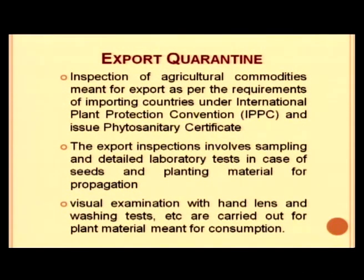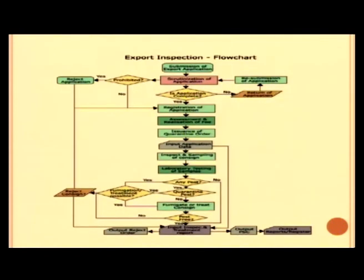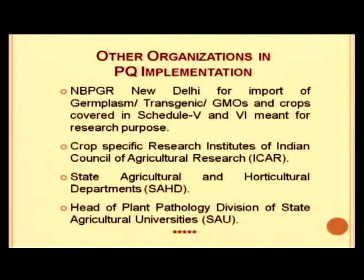For export quarantine, inspection of agricultural commodities meant for export is conducted as per the requirements of importing countries under IPPC, and phytosanitary certificates are issued. Export inspection involves sampling and detailed laboratory tests for seeds and planting material for propagation, and visual examination with a hand lens and washing tests for plant material meant for consumption. The application must be submitted, and after proper inspection by the plant quarantine department, the phytosanitary certificate is issued.